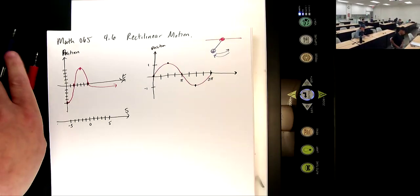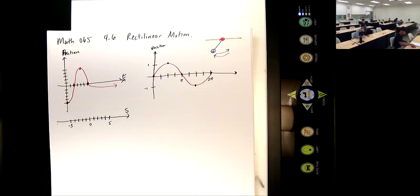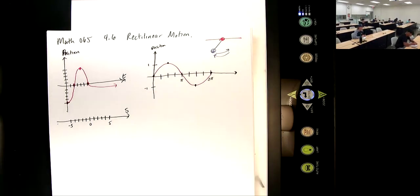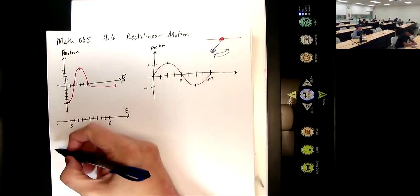Hey there, everybody. We're covering a couple sections today, 4.6 and 4.7. 4.6 is on rectilinear motion. Rectilinear motion, yeah, it's spelled right.